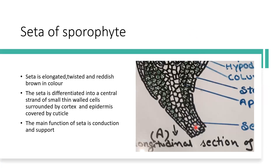The sporophyte of Funaria is differentiated into foot, seta, and capsule. The seta is the lower part carrying the capsule at its tip. In the seta, a conducting strand is present in the center made up of thin-walled cells, which helps in conduction of water and minerals to the capsule. The outermost layer is the epidermis, which is interrupted at places by stomatal openings. Inner to the epidermis is some tissue, but the main parts are the epidermis and conducting strand.